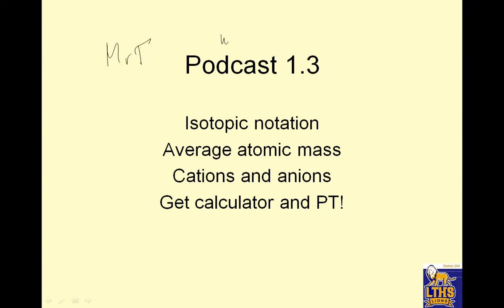Hi everybody, this is Mr. Folly and welcome to podcast 1.3. We're going to talk about isotopic notation, average atomic mass, cations and anions. Get a calculator and a periodic table and let's go through it. PT is periodic table. Should be able to get one. You've got that science notebook too that'll have it. Let's hop to it.